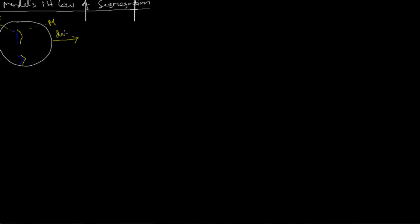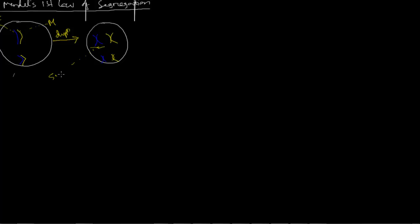During meiosis, the first event is duplication — each chromosome will be duplicated. This blue chromosome will become two chromosomes, what we call sister chromatids. And this yellow also becomes two sister chromatids. The same applies for chromosome 2. This duplicated form is called sister chromatid.